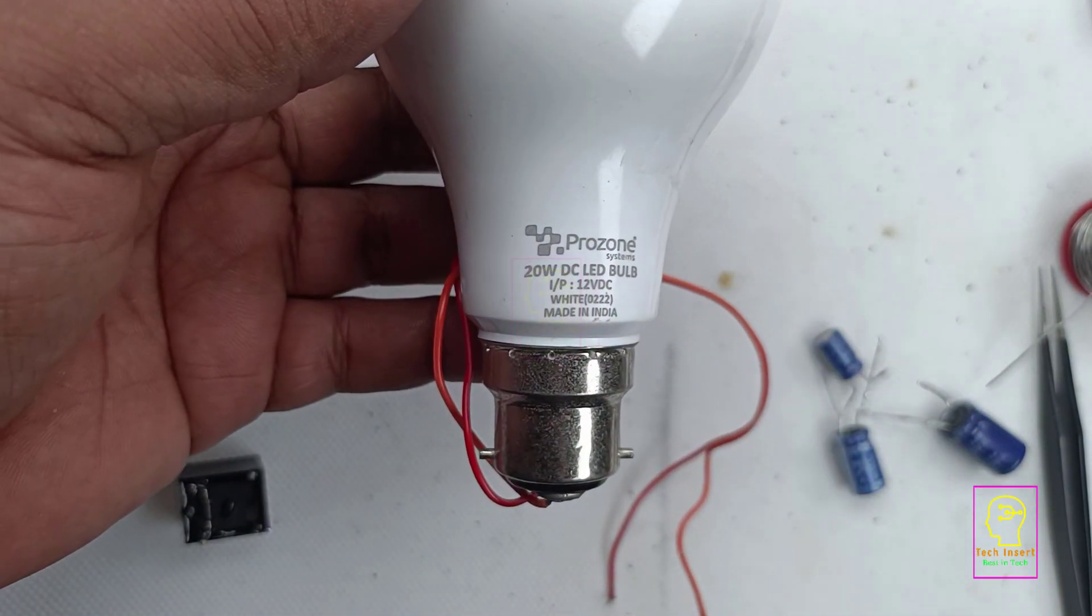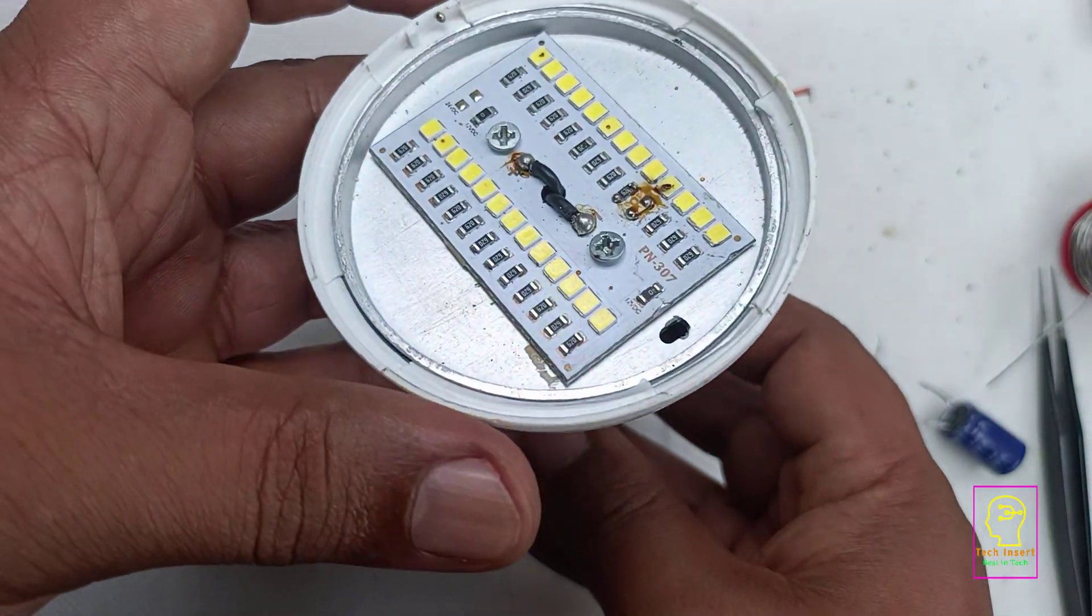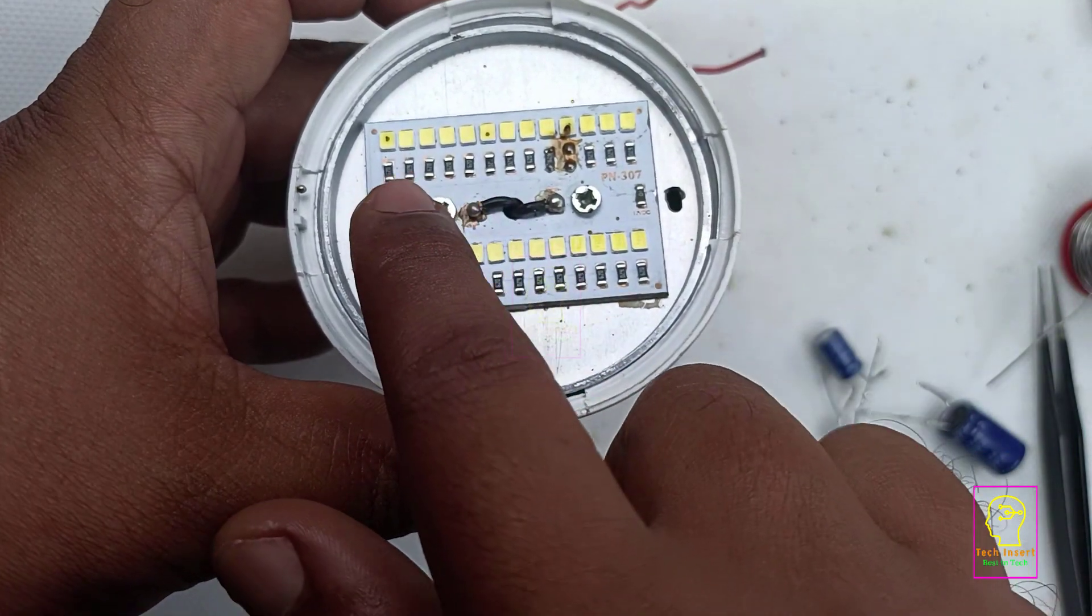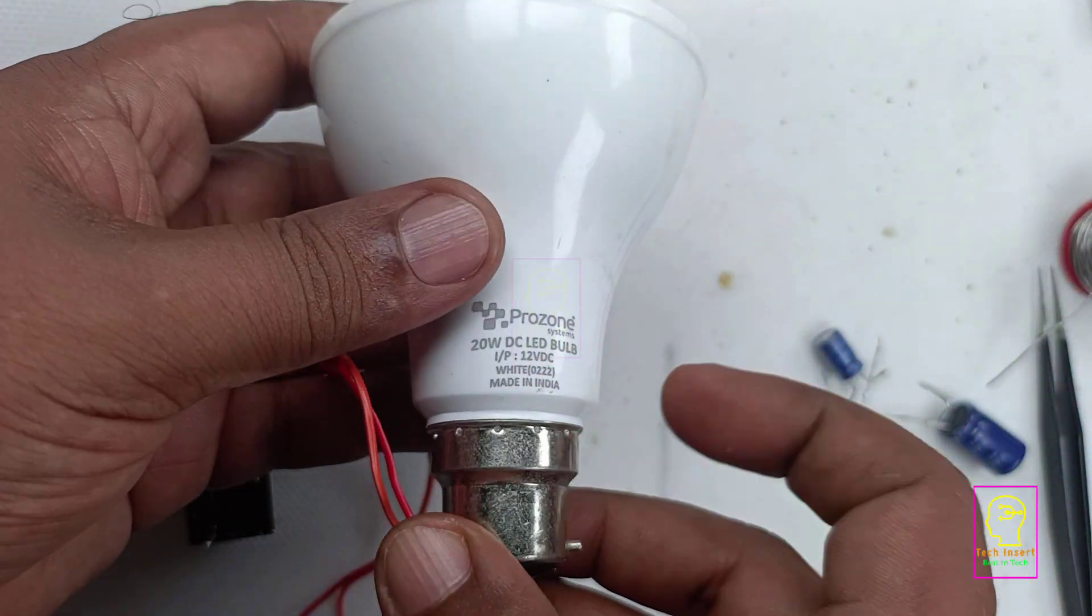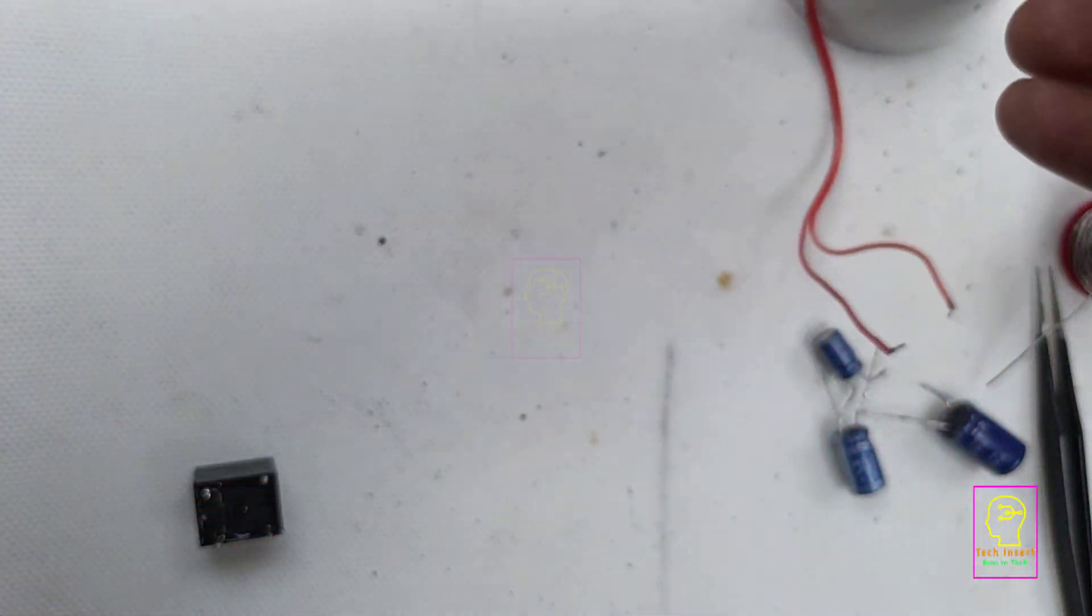The load we are giving to this flashing circuit is this 12 volt 20 watt LED bulb. We don't need to give any current limiting resistors because it is already connected in this LED bulb. You can even connect a 12 volt filament bulb as the load into this circuit.